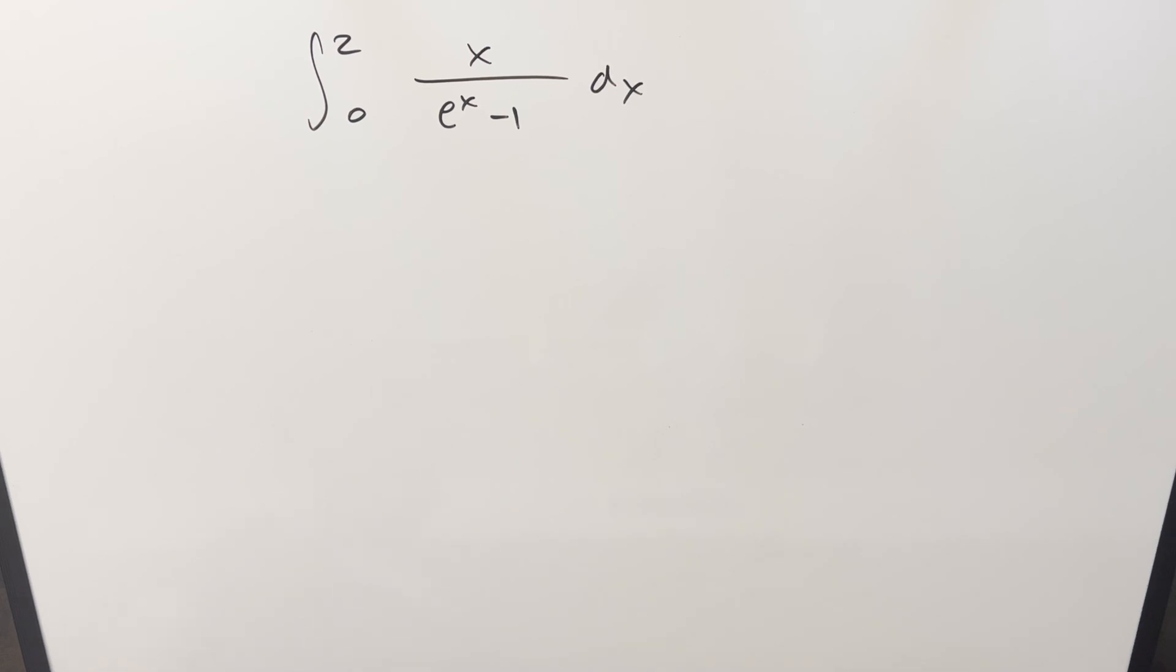We have the integral from 0 to 2, x over e to the x minus 1, dx. And you may notice this is one that I already did recently. This is going to be an alternative method.